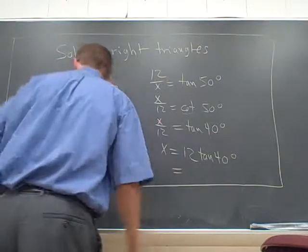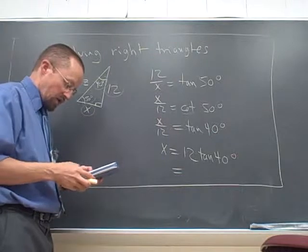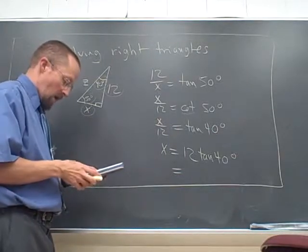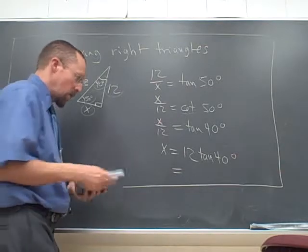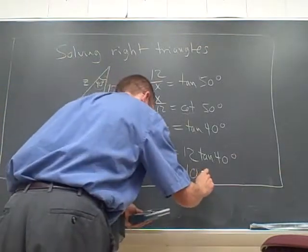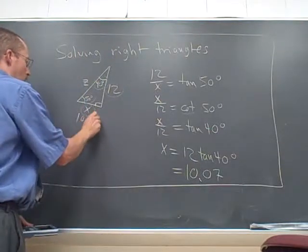So 12 tan 40 degrees. Oh my god, I've got to be in degree mode. I just checked that I'm in degree mode. You've got to check. I just take 12 tan 40, and it's 10.07.